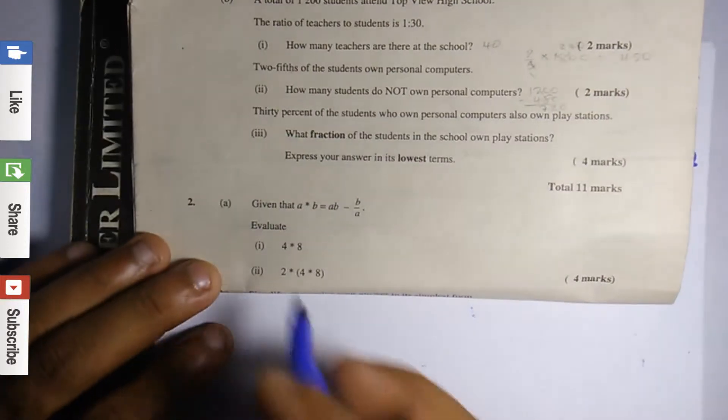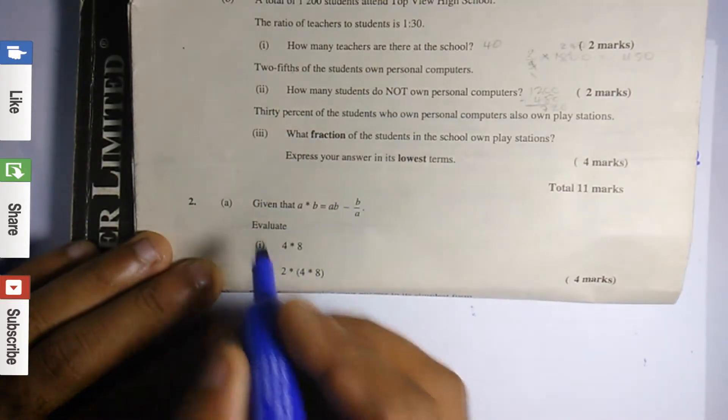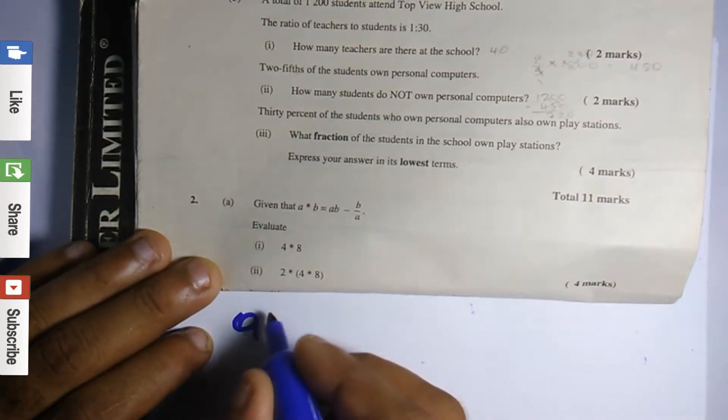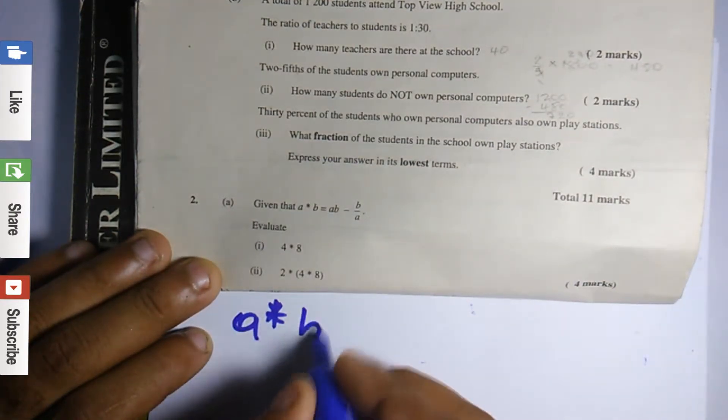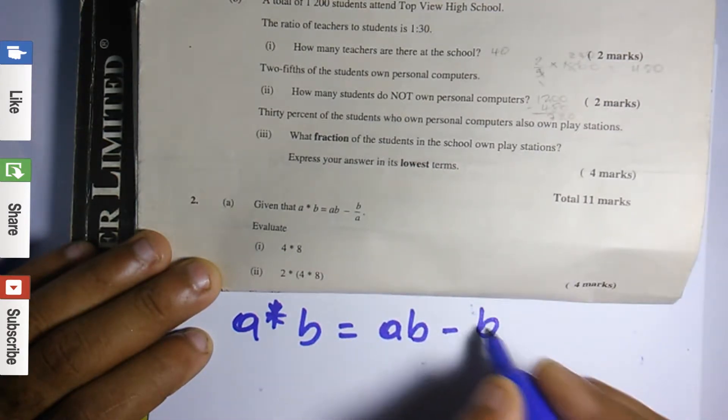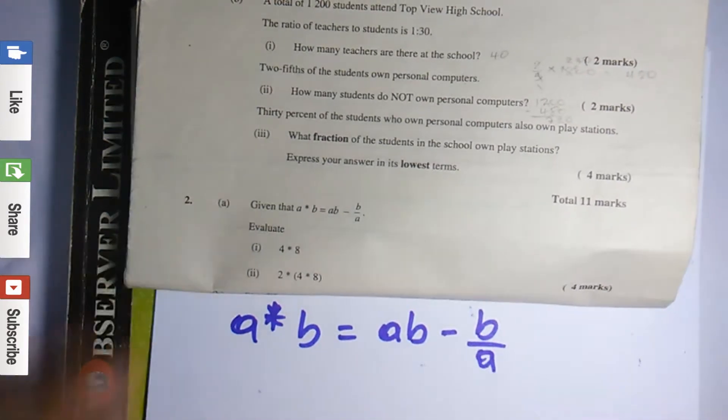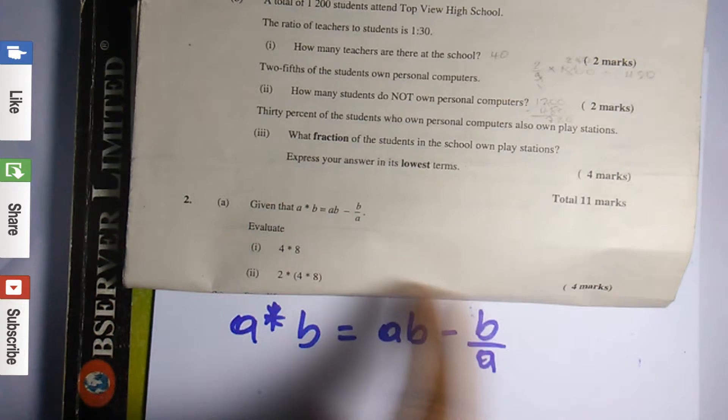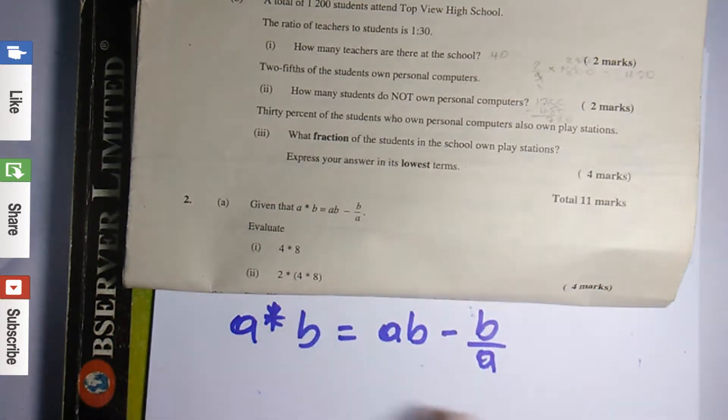For this question, this binary operation question, it is given that a star b is equal to ab minus b over a. If you realize with the binary questions, they're the ones that give you the function to work with or a particular operation. How we structure the operation - with this one it's ab minus b over a.